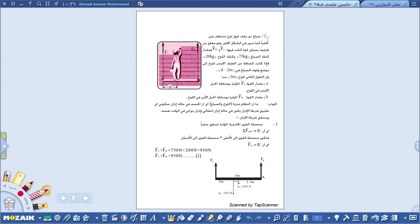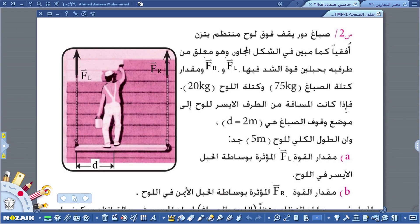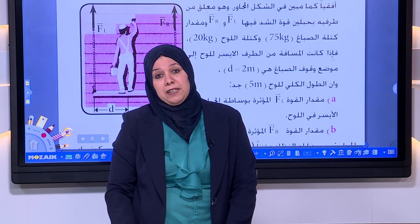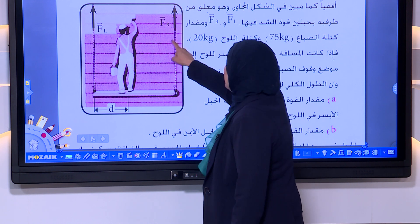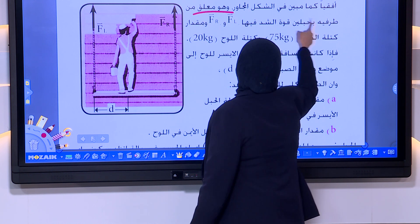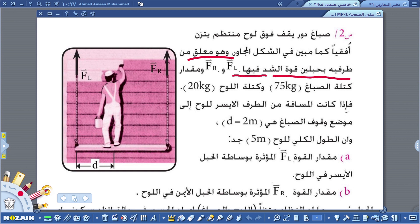ننتقل إلى السؤال الثاني: صباغ دور يقف فوق لوح منتظم يتزن أفقياً — ومعنى يتزن أفقياً أنه تحقق شرطا الاتزان السكوني والدوراني. اللوح معلق من طرفيه بحبلين، قوة الشد في الأول F left والثاني F right.